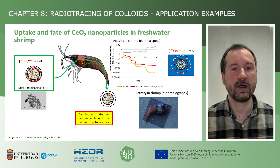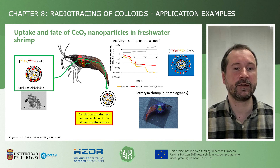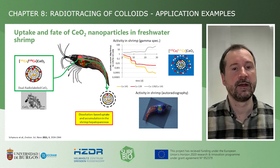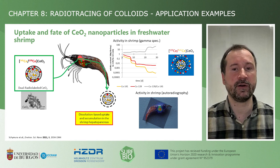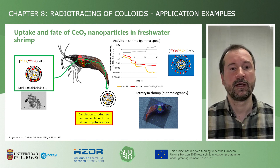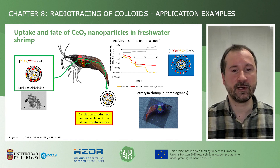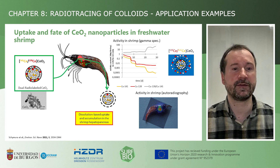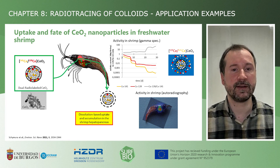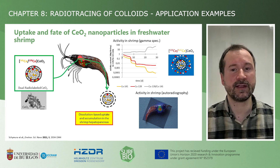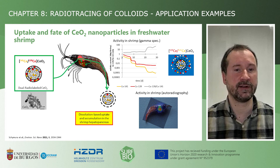However, after 20 days and three feeding steps, the excretion of Cerium-139 stops, while the Cerium-139 to Cerium-141 ratio jumps by an order of magnitude. We interpret this as a near-total excretion of the ceria nanoparticles from the shrimp's digestive system, while the remaining activity represents a 0.1 per mil fraction that took a dissolution-based pathway into the inner organs of the shrimp.